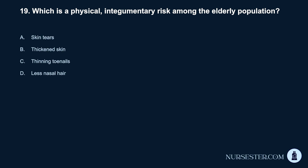Question 19. Which is a physical, integumentary risk among the elderly population? A. Skin tears. B. Thickened skin. C. Thinning toenails. D. Less nasal hair.